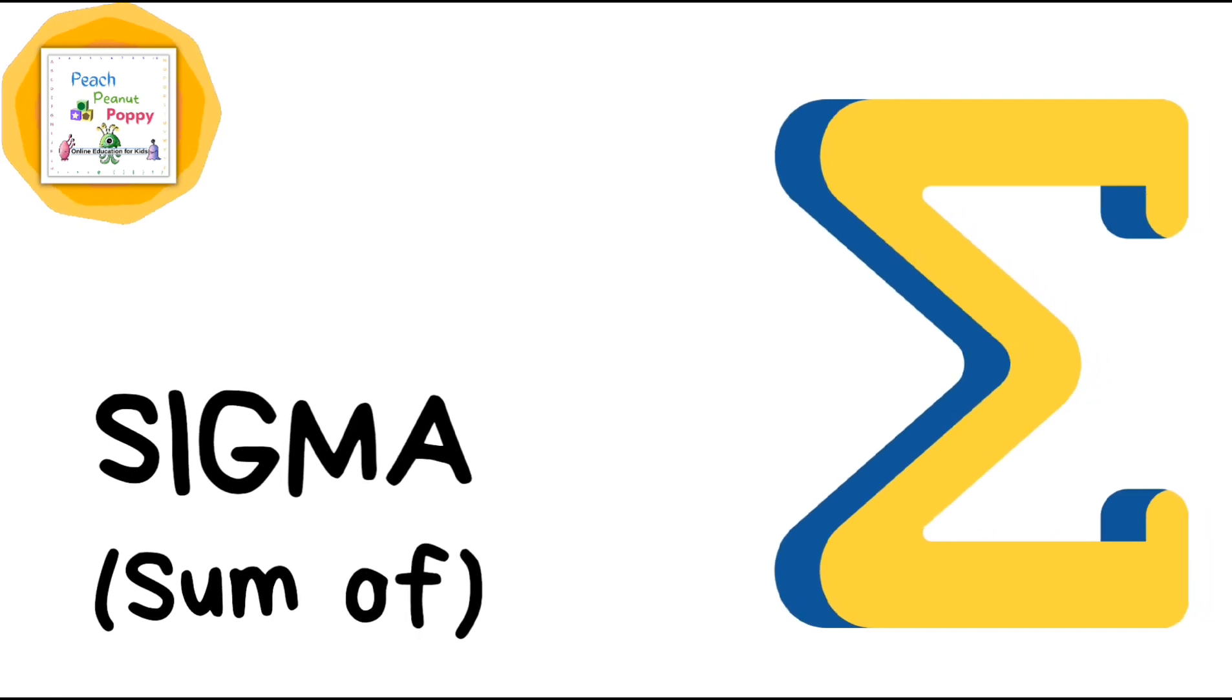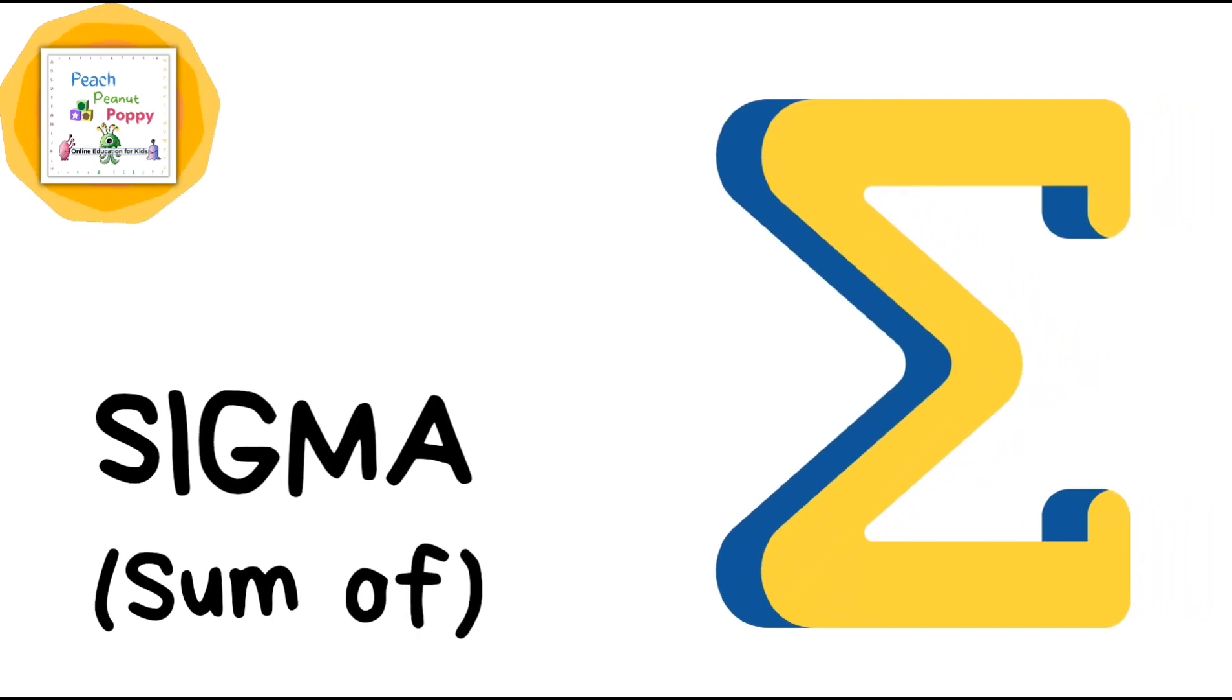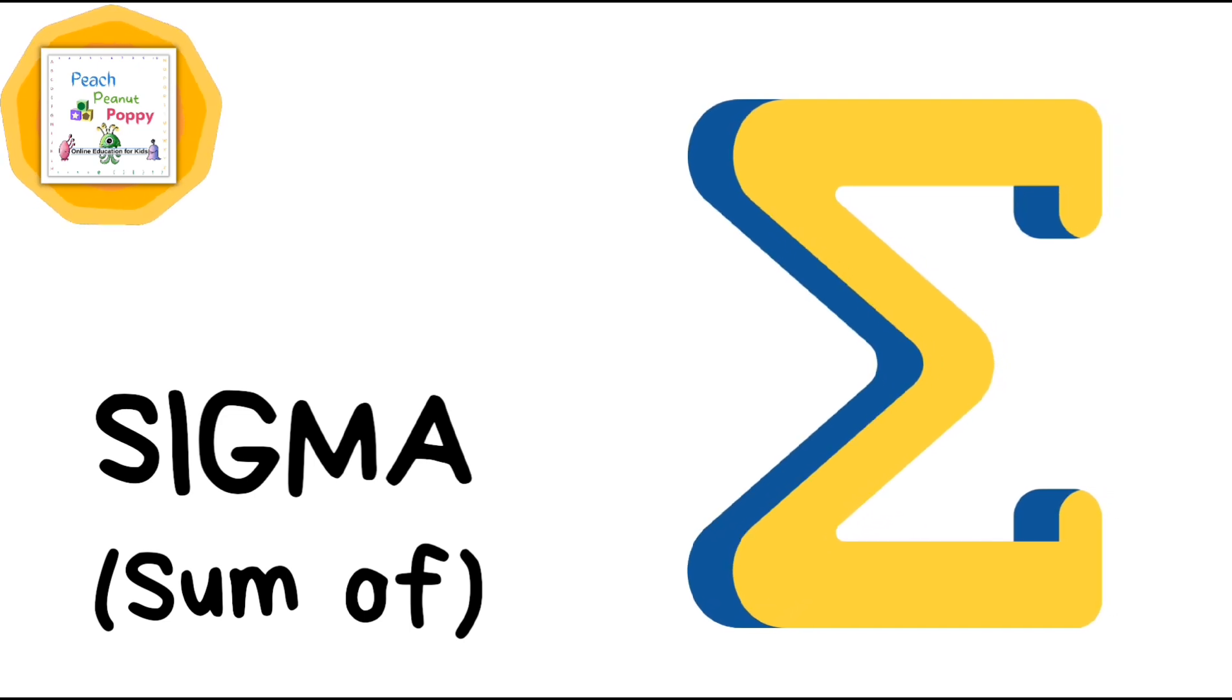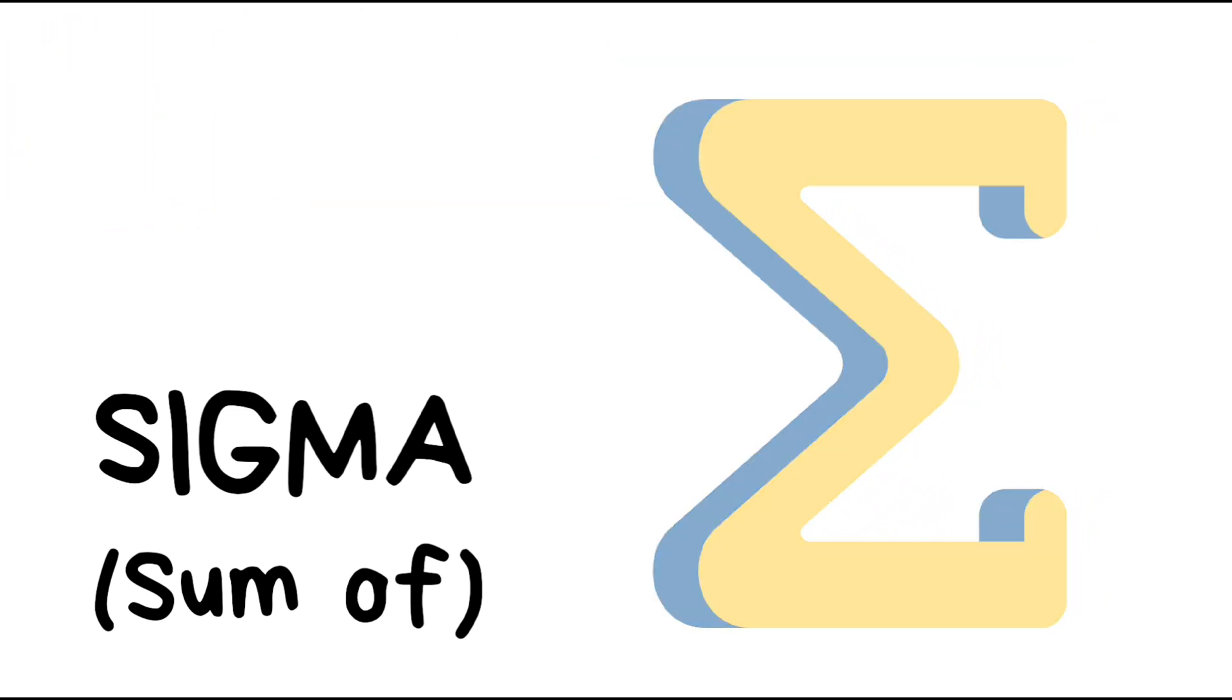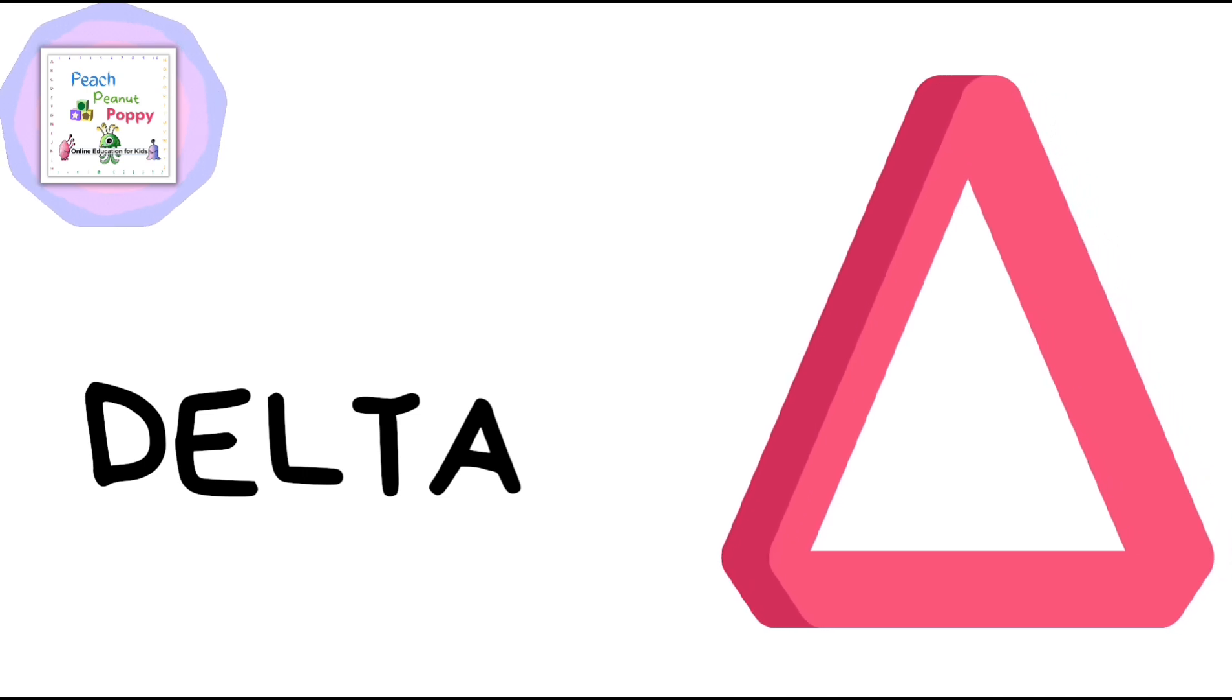Then we have the sign for Sigma, which is also called Sum of. Sigma or the sign for Sum of. Next is Delta. Delta.